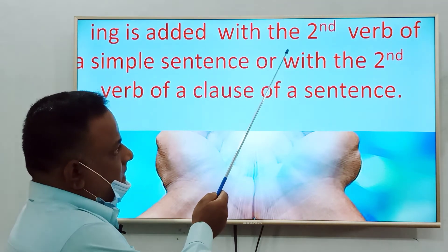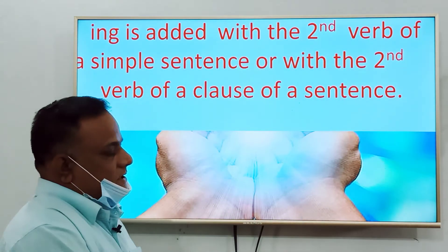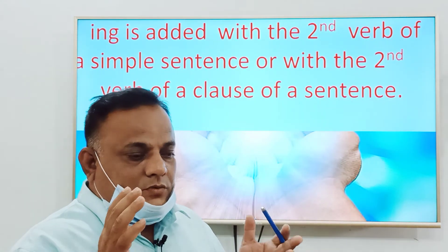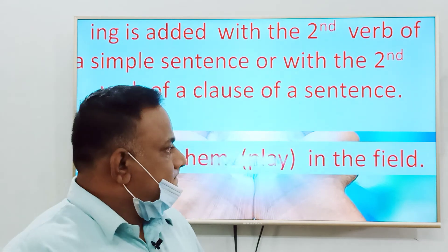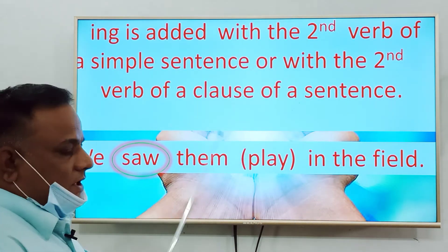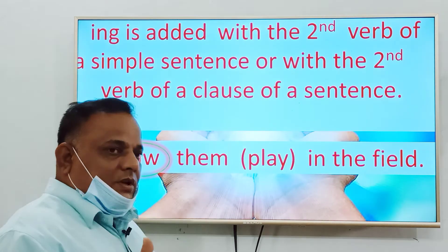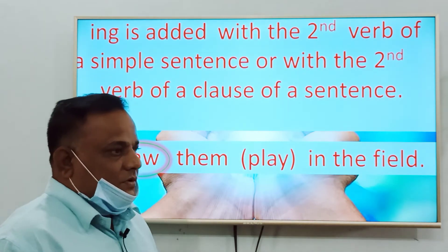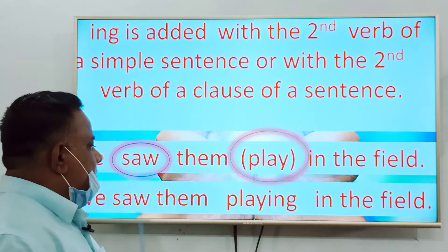ing is added with the second verb of a simple sentence, or with the second verb of a clause of the sentence. If you see two verbs in a simple sentence, you have to add ing with the second verb. And if you see two verbs in a clause of the sentence, then you have to use ing with the main verb. The example is: 'We saw them play in the field.' This is a simple sentence, so there must be only one finite verb. As we see a second verb, we have to add ing with it. So the right answer will be 'playing' — 'We saw them playing in the field.'